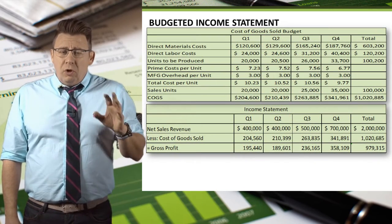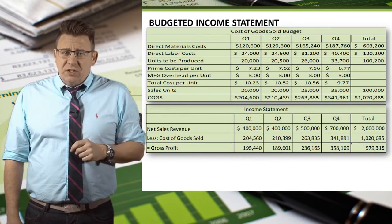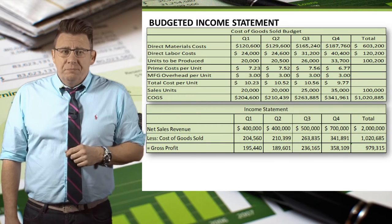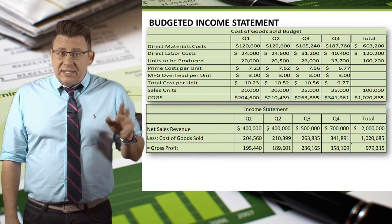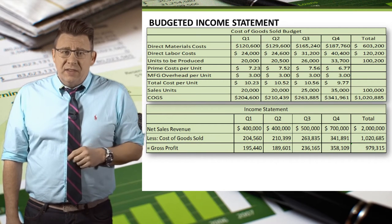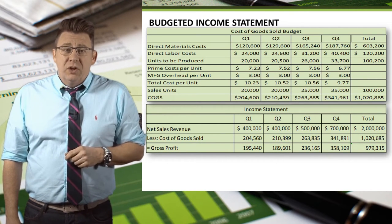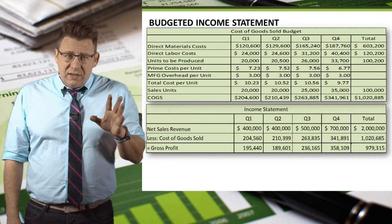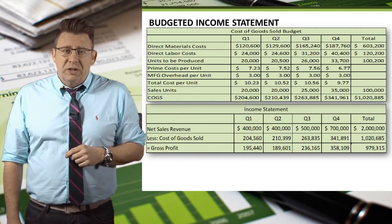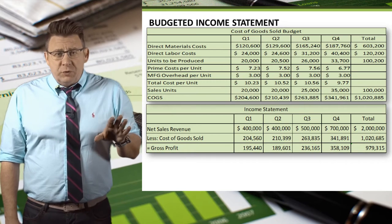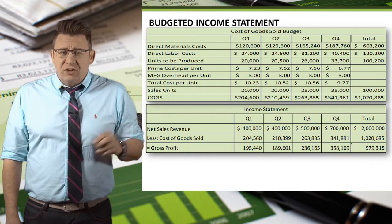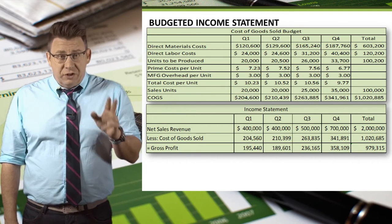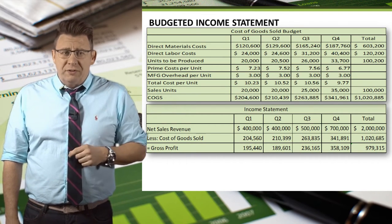Then we will pull the Cost of Goods Sold amount from the Cost of Goods Sold Budget. Again, in Excel, we would link the cells in the Income Statement to the related cells in the Cost of Goods Sold Budget. The difference between Budgeted Sales Revenue and Budgeted Cost of Goods Sold is the Budgeted Gross Profit.